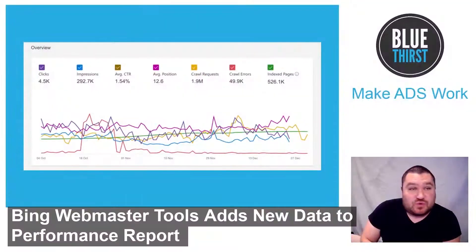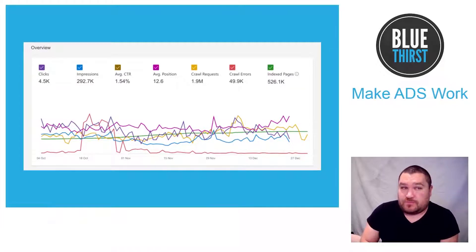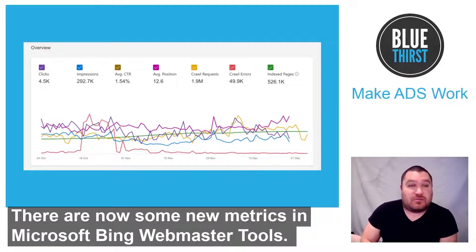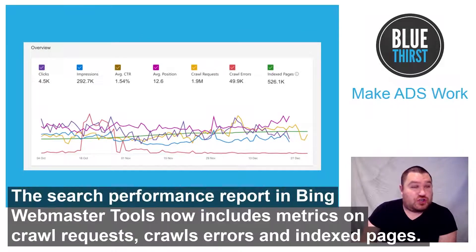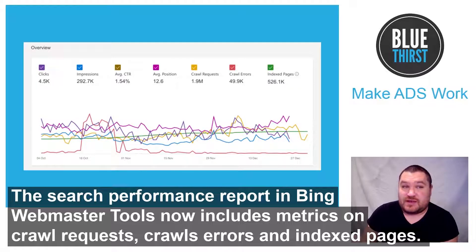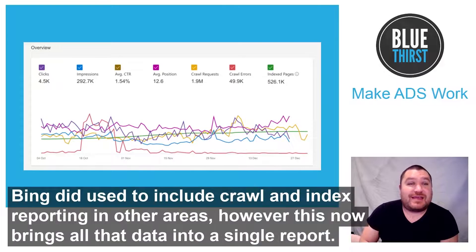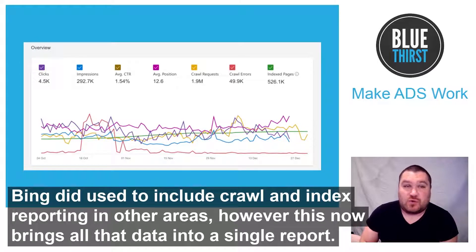Bing Webmaster Tools adds new data to the Performance Report. There are some new metrics in the Microsoft Bing Webmaster Tools. The Search Performance Report now includes metrics on crawl requests, crawl errors, and indexed pages. Bing did have crawl and index reporting in other areas, however this now brings all of the data into a single report.